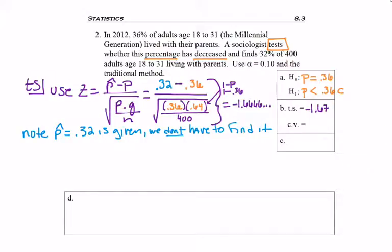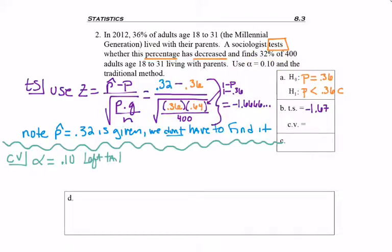So next thing we need to do is find the critical value. So we start with alpha, which is given to us to be 0.10, and we have a left tail test. Now, how do I know it's a left tail test? Remember, H1 has less than, so I have a left tail test.